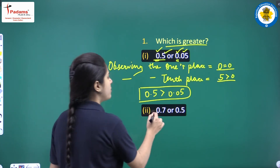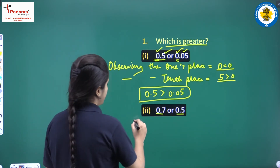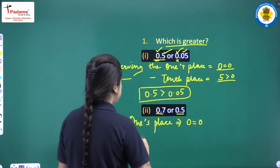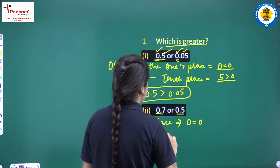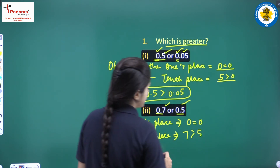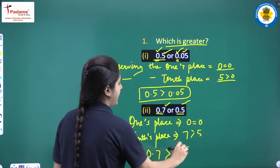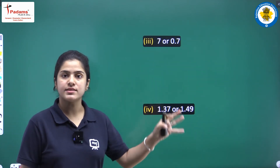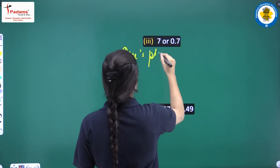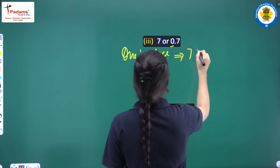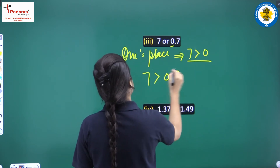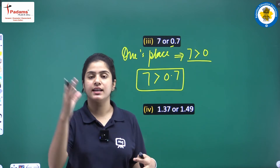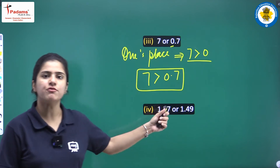Next: 0.7 or 0.5, which is greater? The ones place: 0 equals 0, so shift to the tenths place. It is 7 versus 5, and 7 is greater than 5, so 0.7 is greater than 0.5. Next: 7 or 0.7, which is greater? Observing the ones place: 7 versus 0 — clearly 7 is greater than 0. So 7 is greater than 0.7.